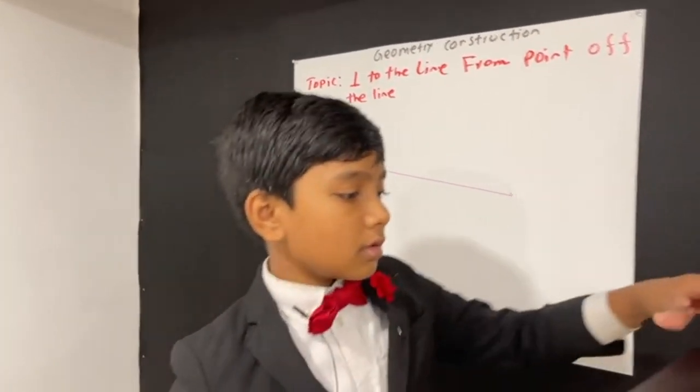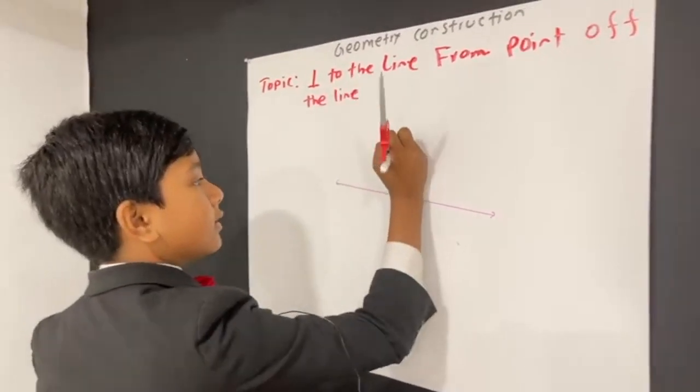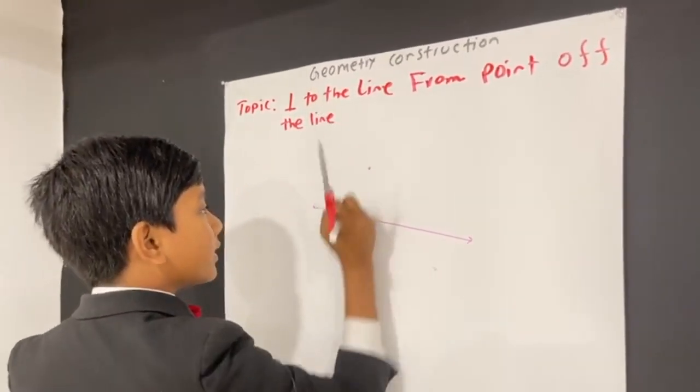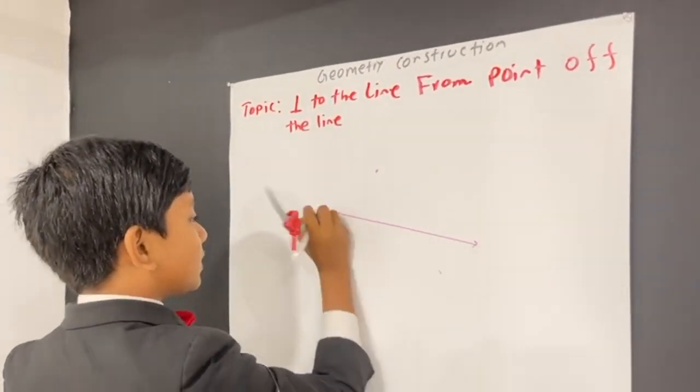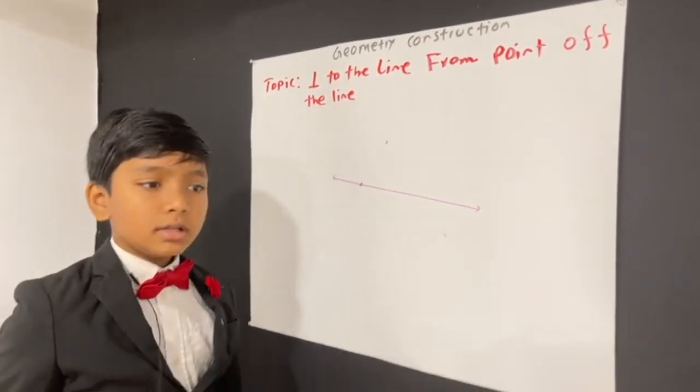And now, what we're going to do is, I'm going to draw a completely unrelated point somewhere off the line. And now, I'm going to pick some completely arbitrary point on the line.